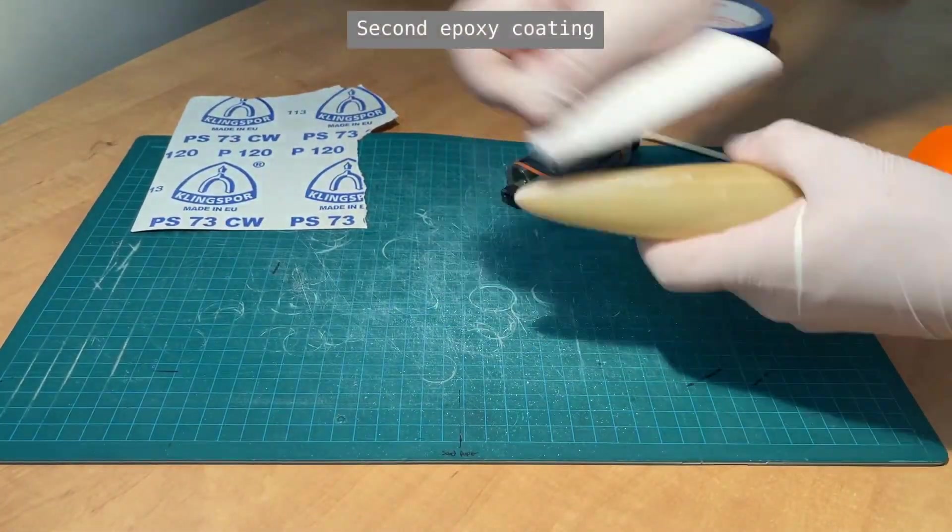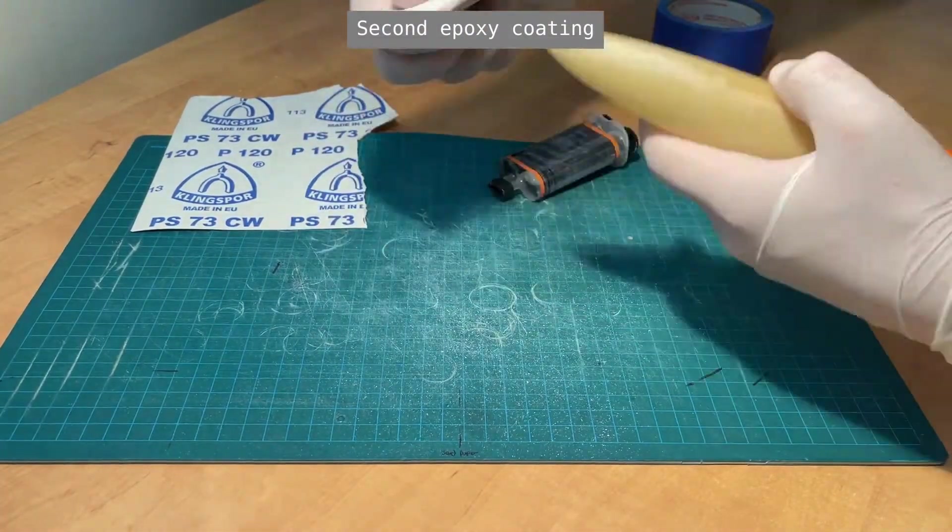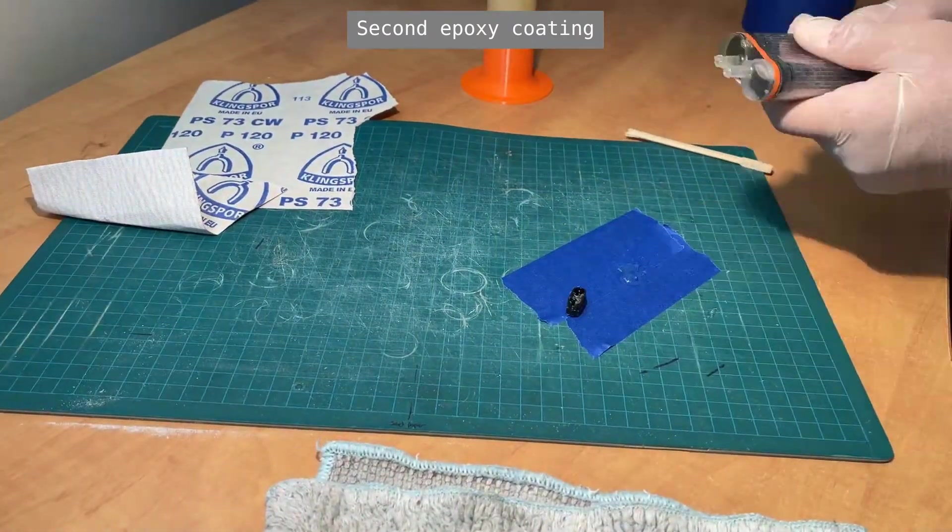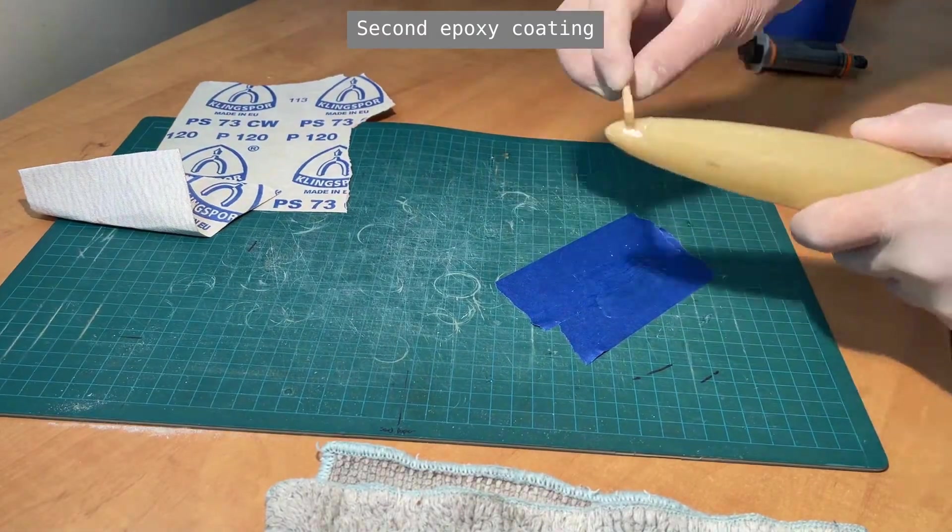Since some gaps still appeared on the cone around the tip, 120 grit sandpaper was used to scuff up the area and a second coat of epoxy was then applied. The cone was then again left for 24 hours until hard enough to sand.